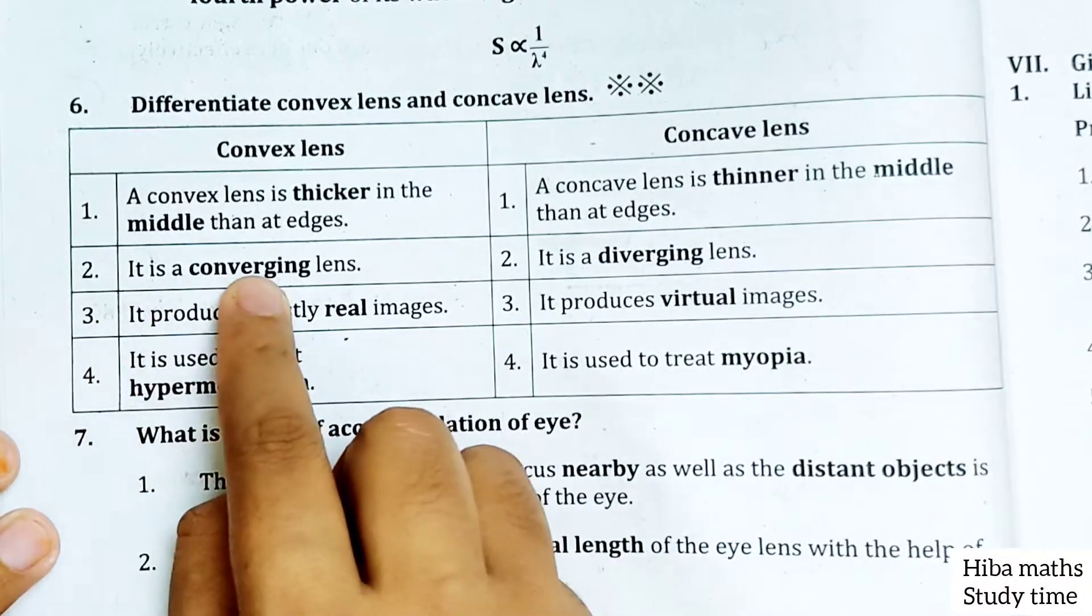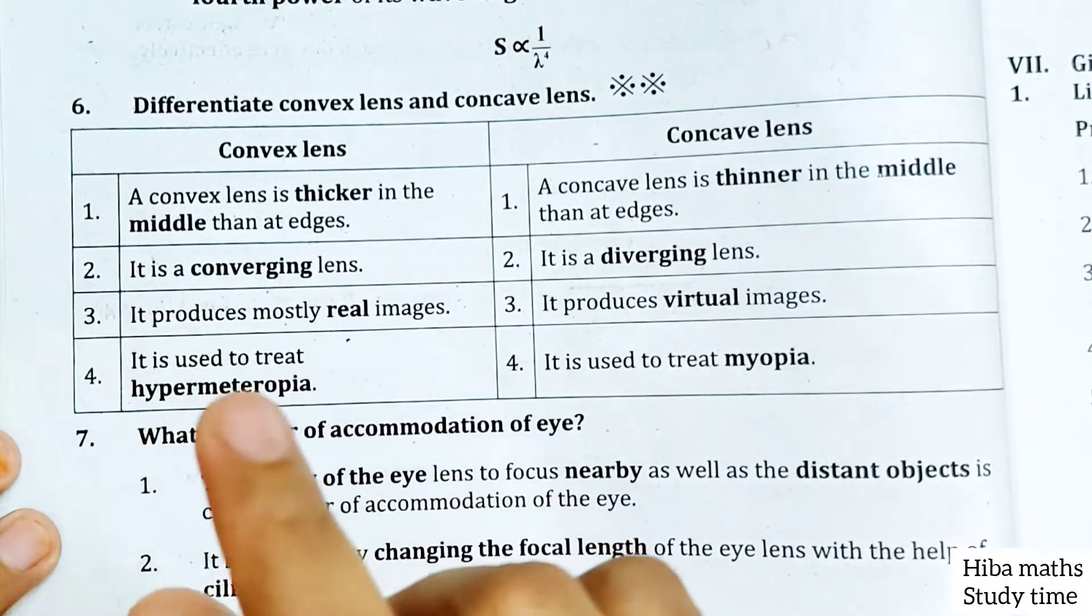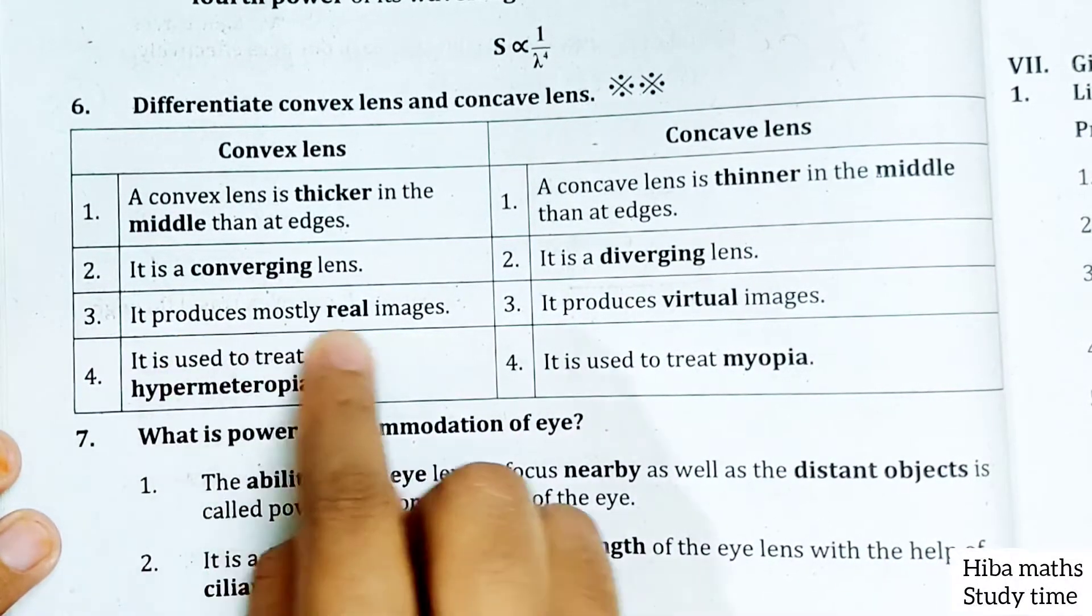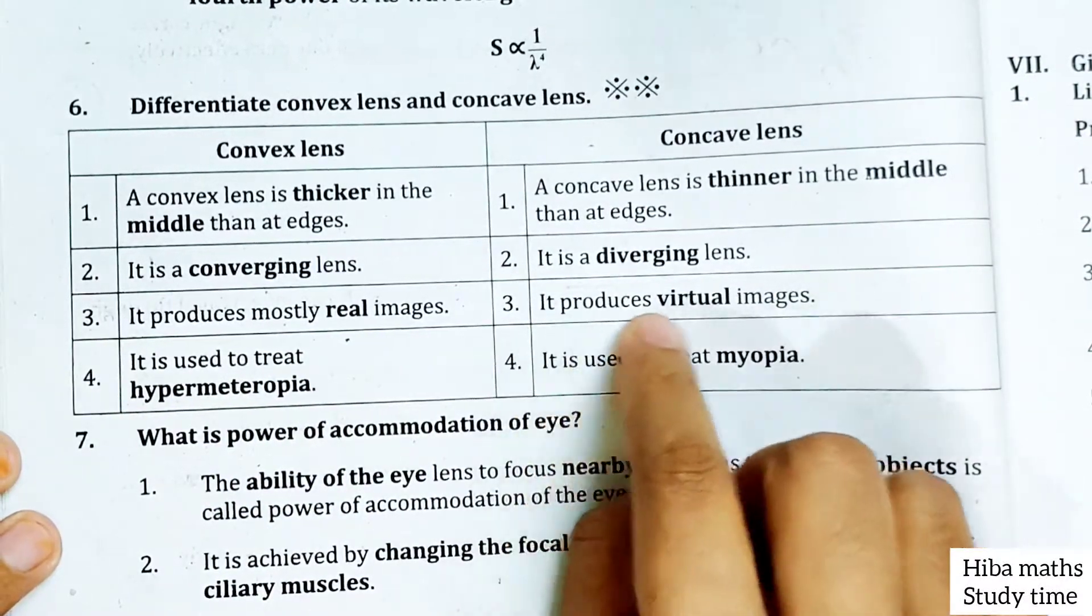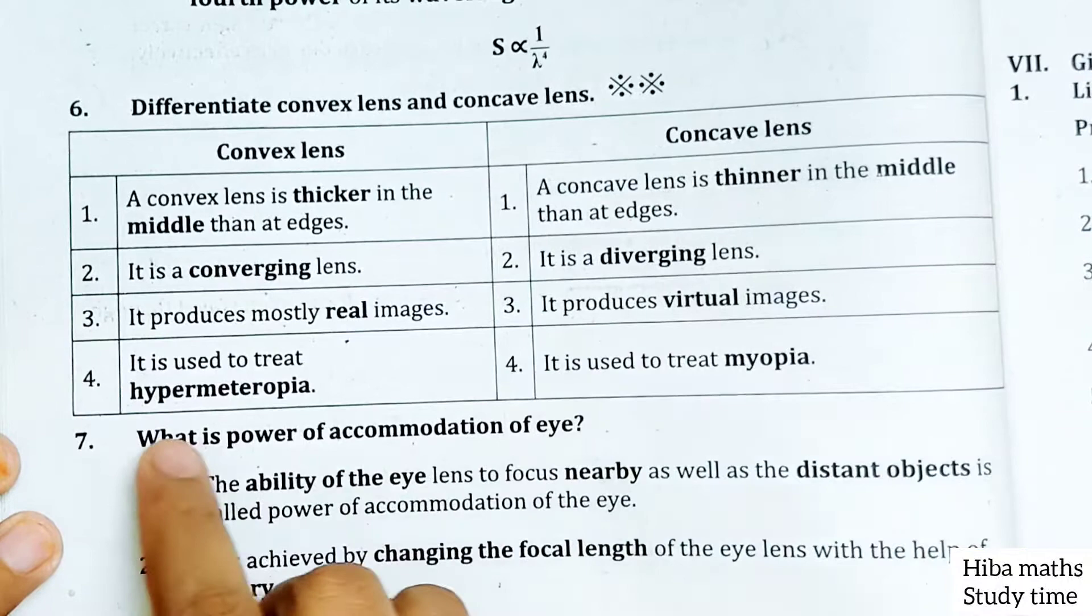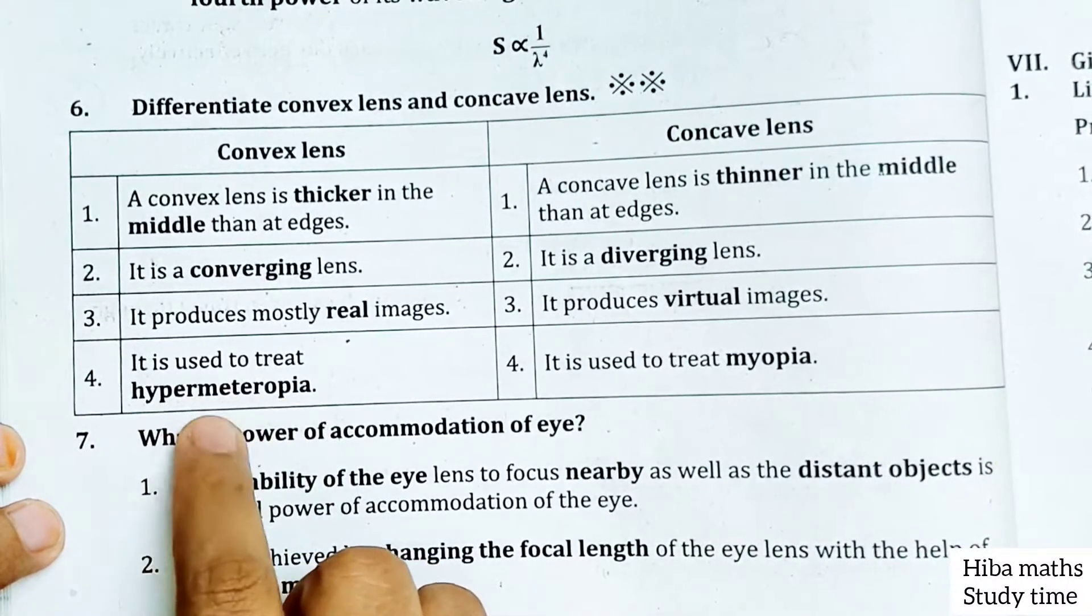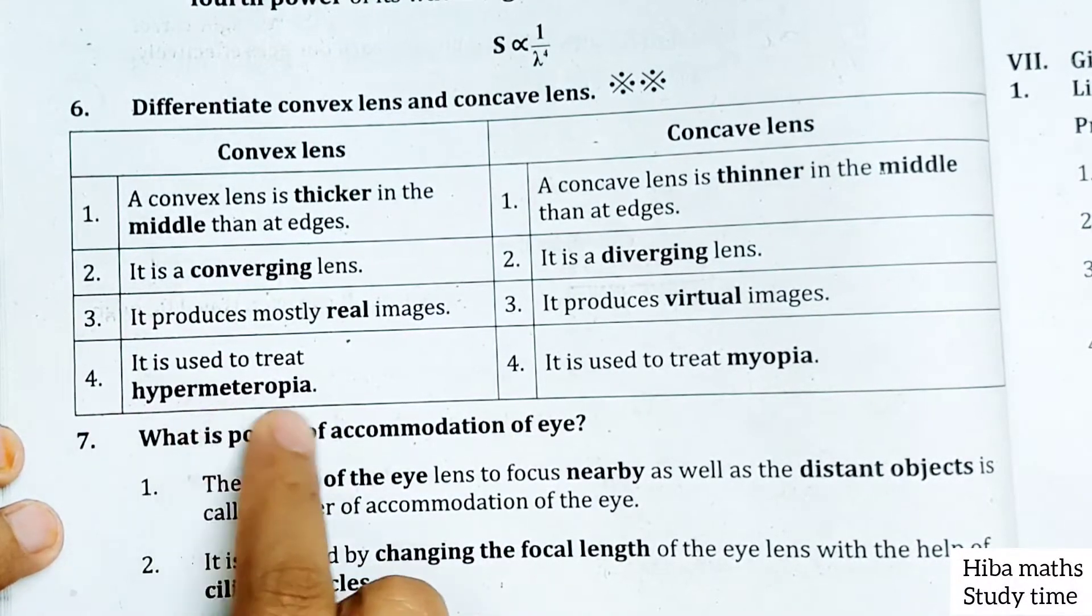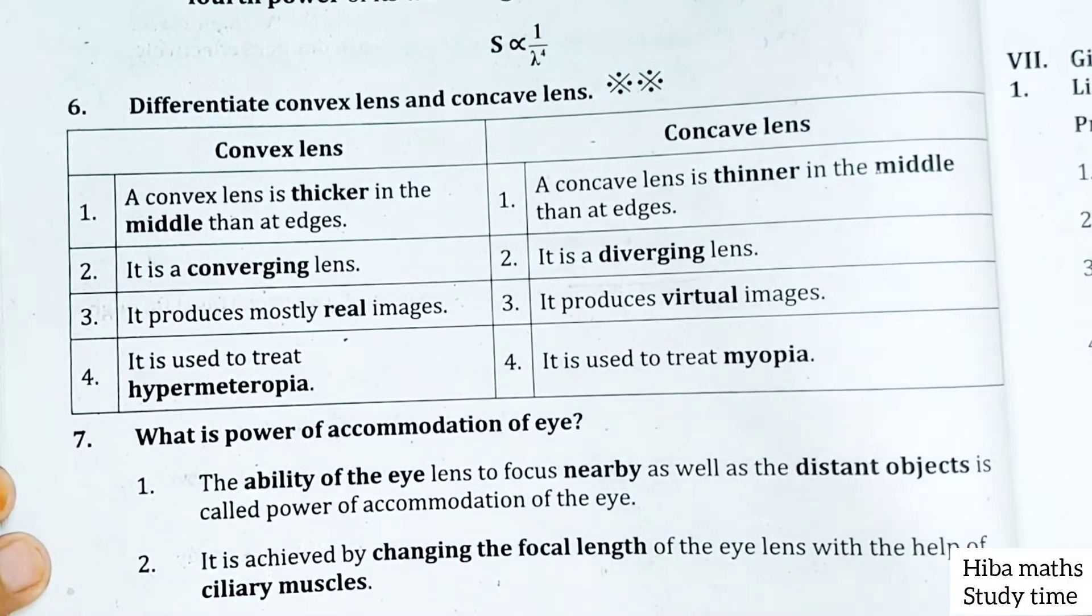It is a converging lens, it is a diverging lens. It produces mostly real images, it produces virtual images. It is used to treat hypermetropia, concave lens is used to treat myopia.